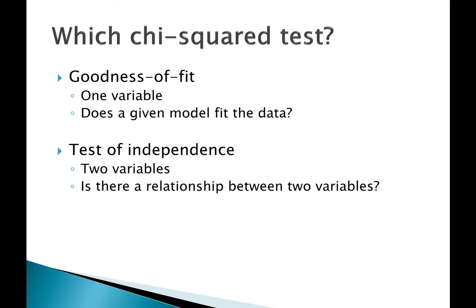Another commonly confused distinction is chi-squared goodness-of-fit vs. chi-squared test of independence. The difference is whether you have one variable or two. Think of it as the number of survey questions asked. One question means goodness-of-fit; two questions means test of independence. If the statistical question asks whether a given model fits the data or whether categories are equally likely, that's goodness-of-fit. If it asks whether there's a relationship or association between two variables, that's a test of independence.